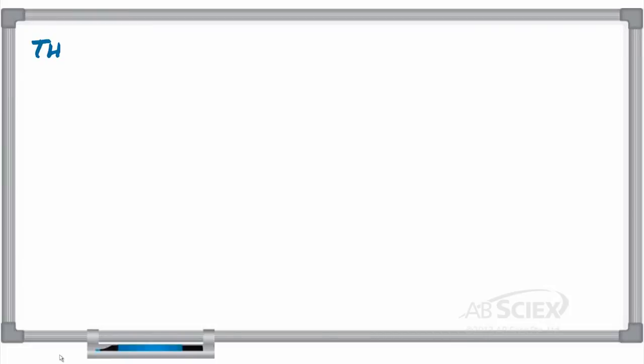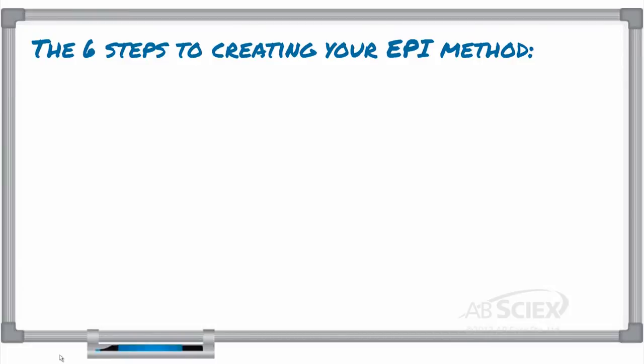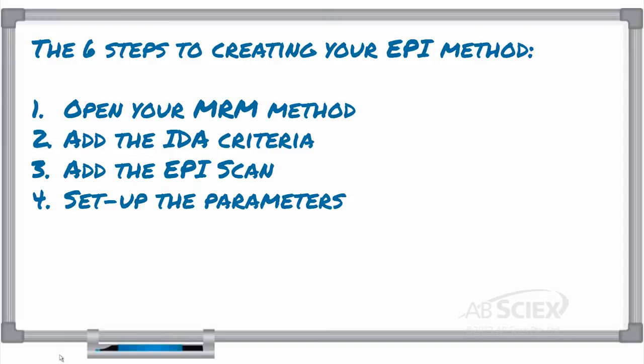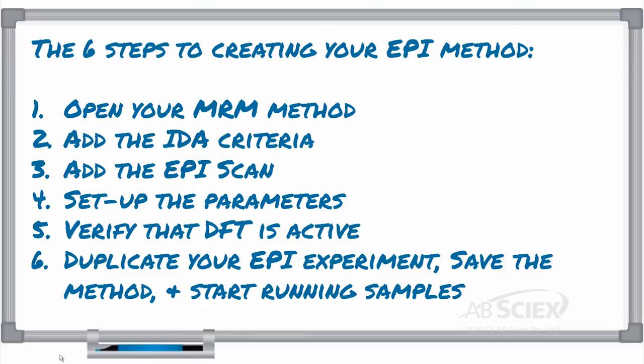Creating your EPI method is easy. Just remember the six steps. Step 1. Open the MRM method. Step 2. Add the IDA criteria. Step 3. Set up the EPI scans. Step 4. Set up your parameters. Step 5. Verify that DFT is active. And Step 6. If you selected to monitor more than one peak, duplicate your EPI experiment, then save the method and you're ready to run samples.